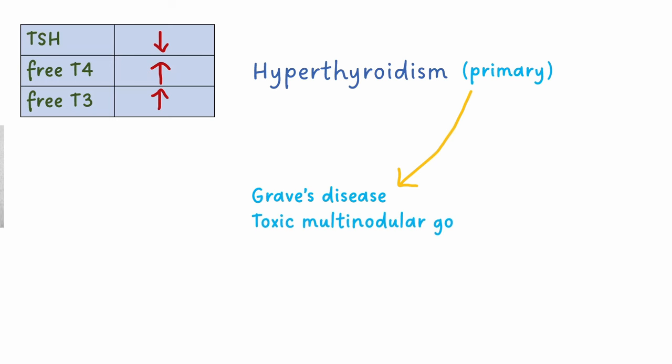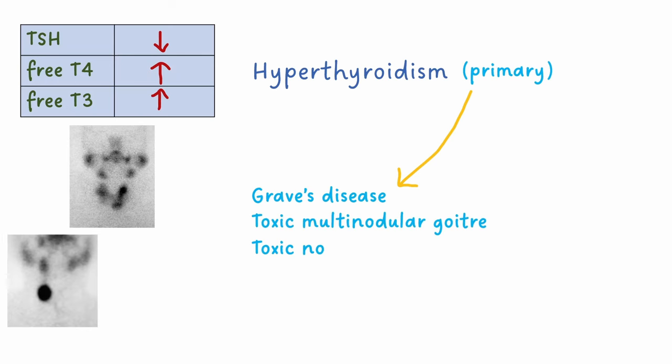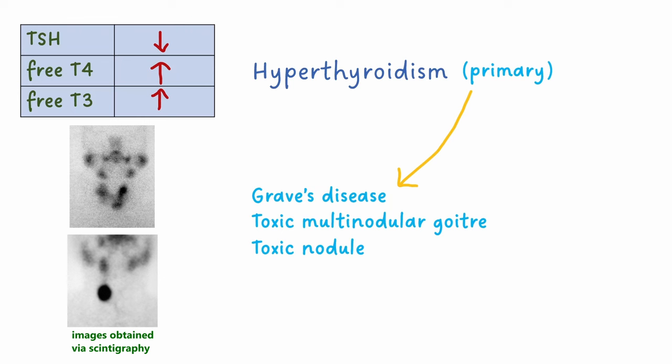A toxic multinodular goiter, or toxic nodule, can also cause primary hyperthyroidism.